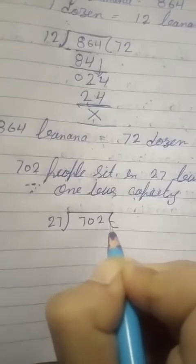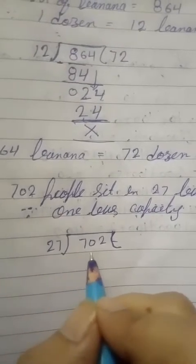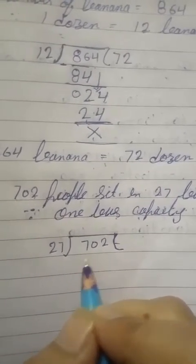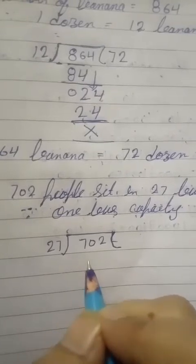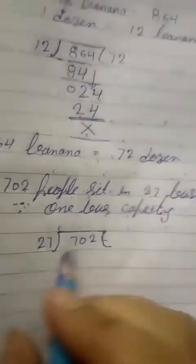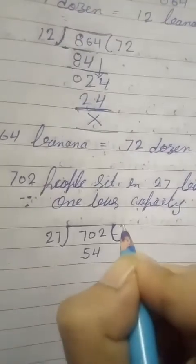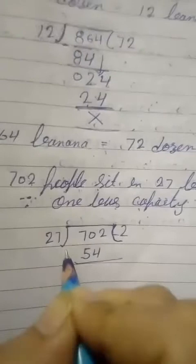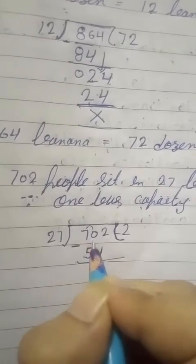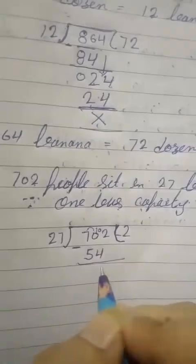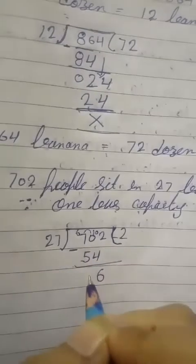702 people sit in 27 buses. Next line is: one bus capacity. So divide: 702 is dividend and 27 is divisor. First, take two digits which is 70. Let's pick the table of 27. We know that 70 does not lie in the 27 table, so we write just the smaller digit which is 54, because 27 twos is 54. Write here 2. Now subtract the numbers: 0 minus 4 is not possible, take a carry from the next number. Now the number is 10. 10 minus 4 is 6. 6 minus 5 is 1.